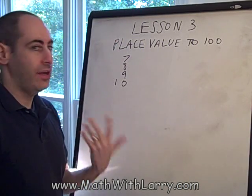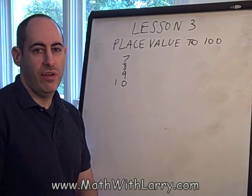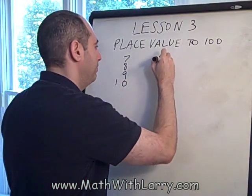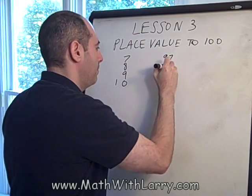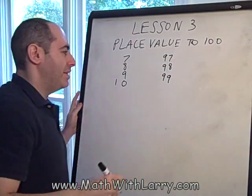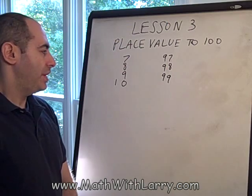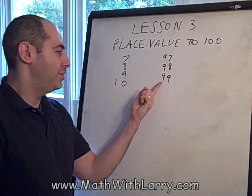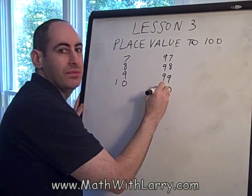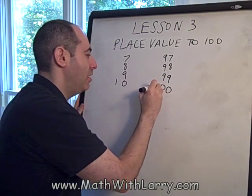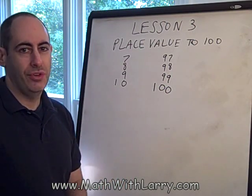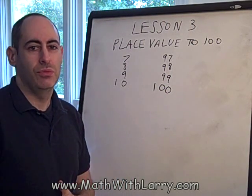When we keep counting — 11, 12, 13 — eventually we'll get to 97, 98, 99. And again, we now have to say 100. We can't fit 3 digits into just 2 columns. So we have to put a 0 in the 1's column, a 0 in the 10's column, and we have to start a new column for the 100. That's basically how our place system works.